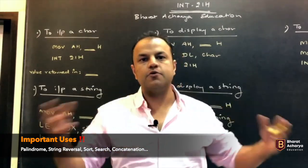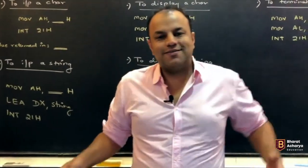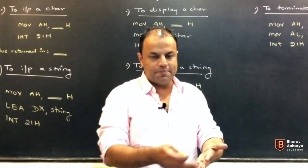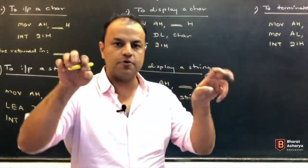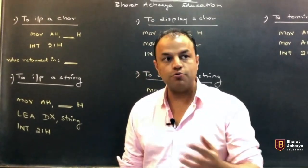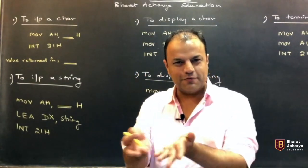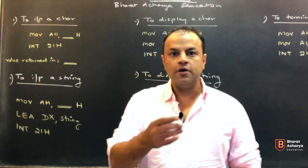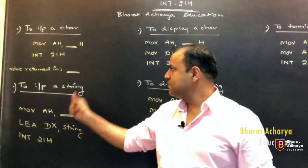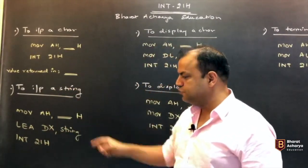Now, INT21 can also be used to input a whole string. Instead of just taking a single value, a whole string. Now, this is typically useful in palindrome program. Many people who do AT86 programming come across this program called palindrome. In Bombay University, it's super popular. One of the most frequently asked programs. You've got to see forward, reverse, whether the string is the same or not.